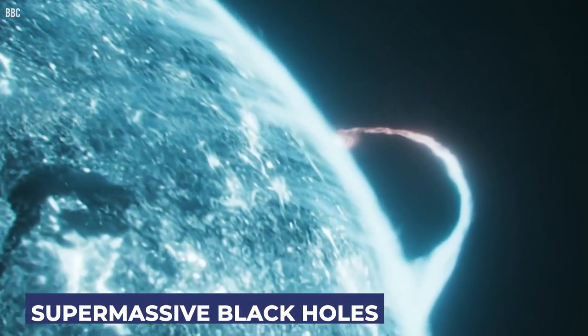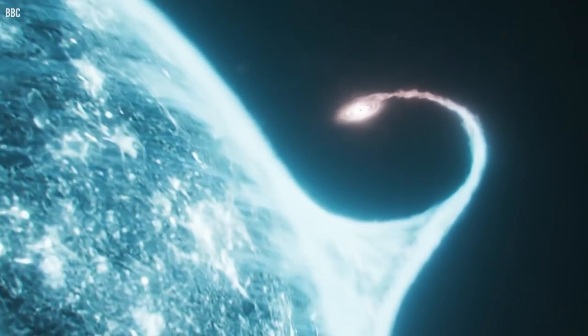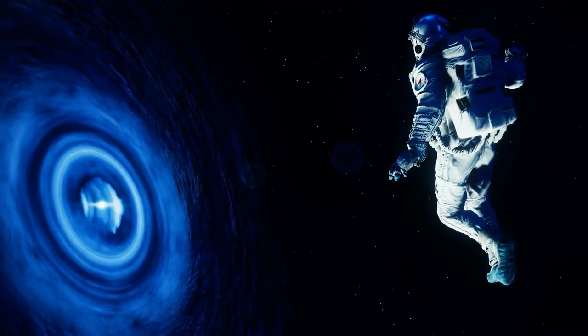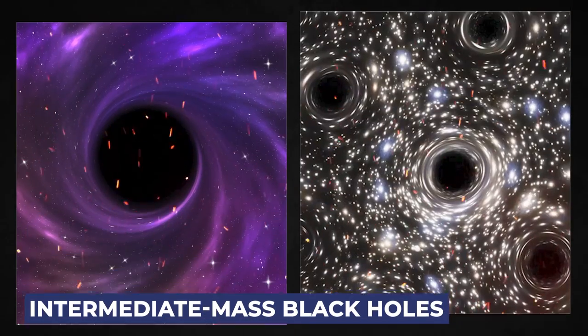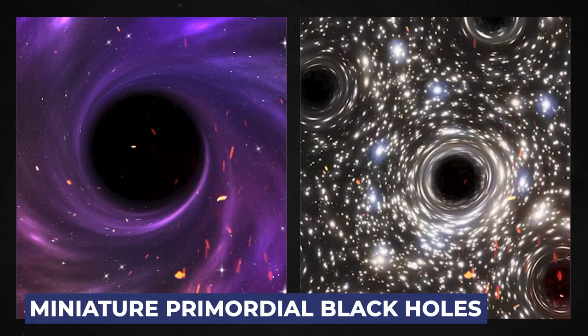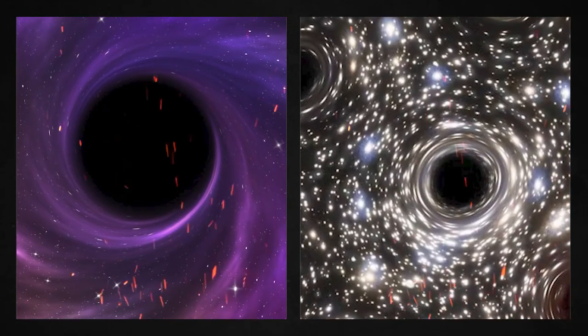Stellar black holes are formed from the remnants of enormous stars, while supermassive black holes exist at the centers of most galaxies, including our own Milky Way. Intermediate-mass black holes and miniature primordial black holes are two other theoretical types.